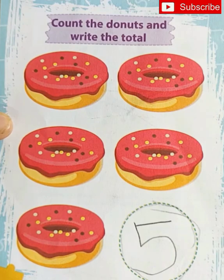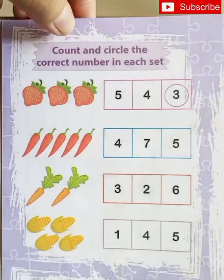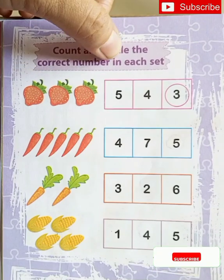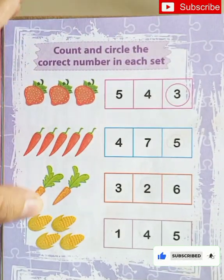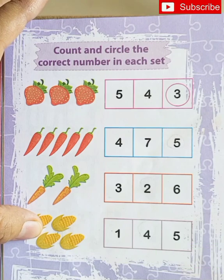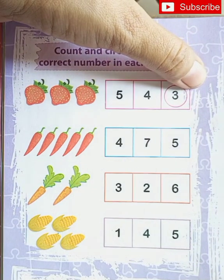Very good! Activity is count and circle the correct number in each set. You have to count all these vegetables and circle on the correct number. Okay?